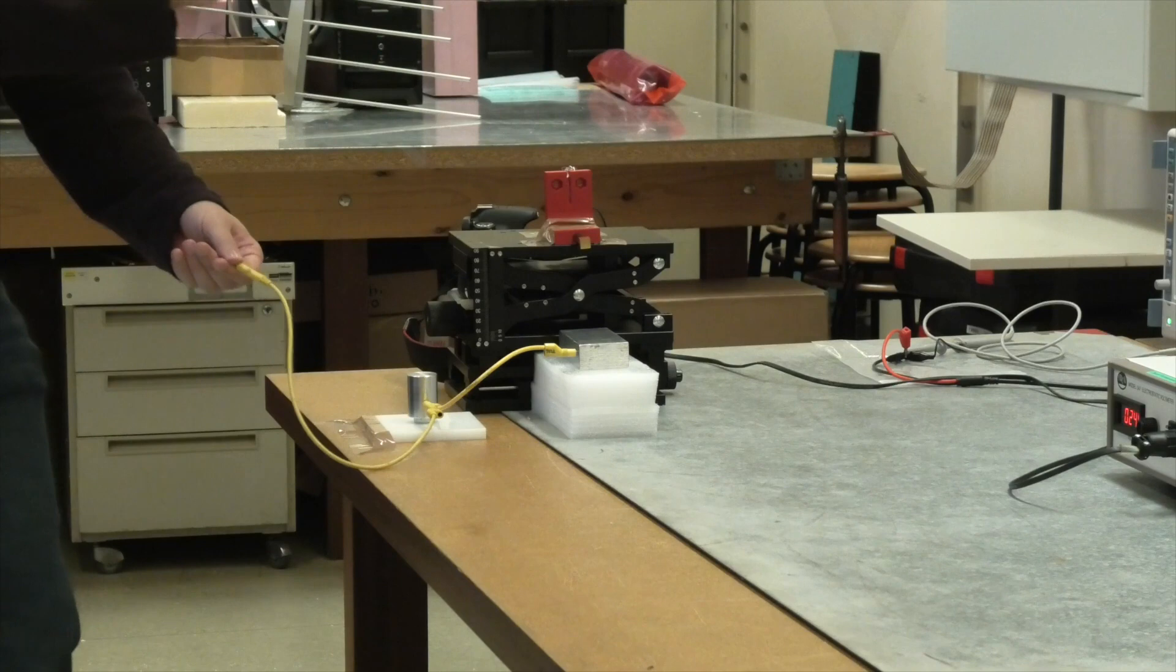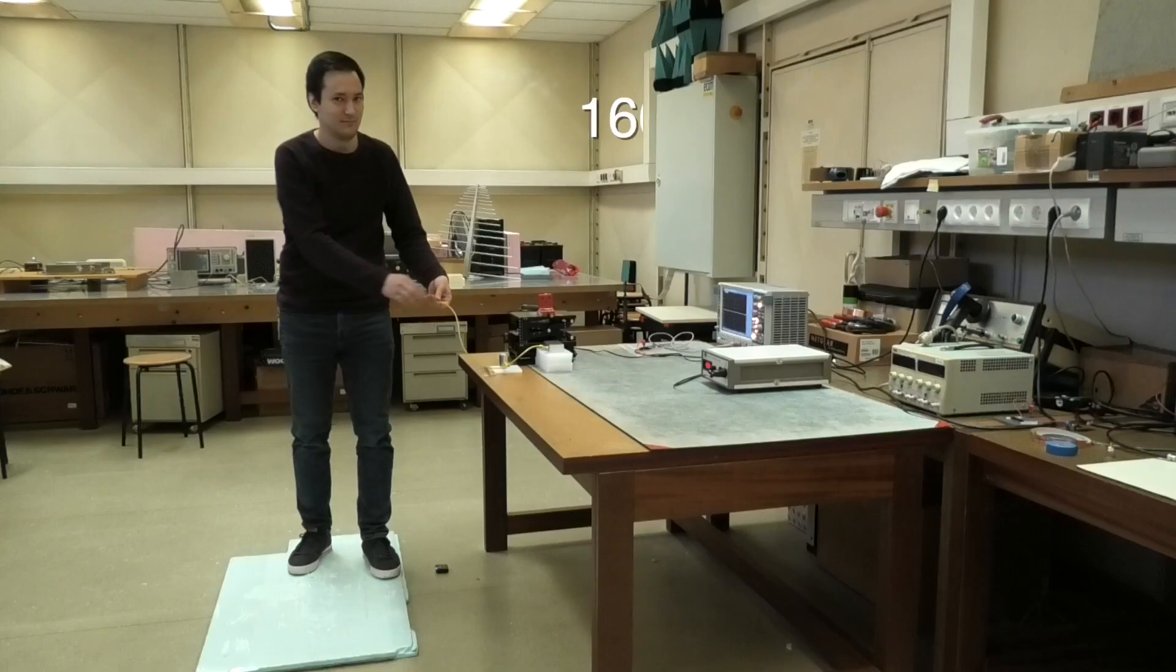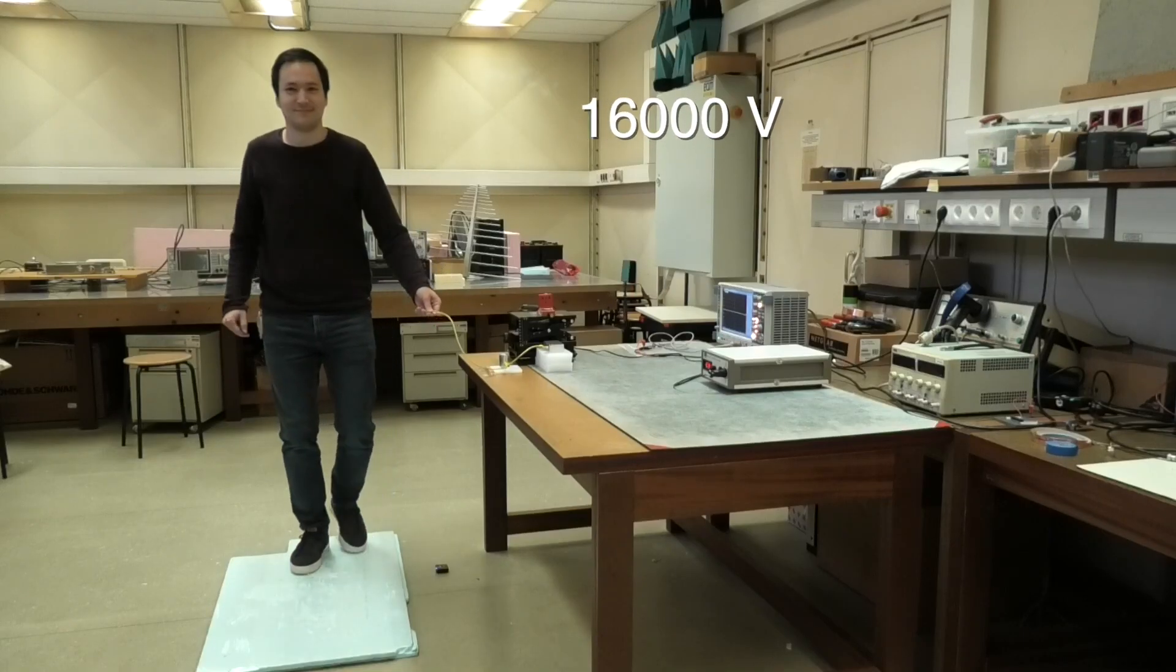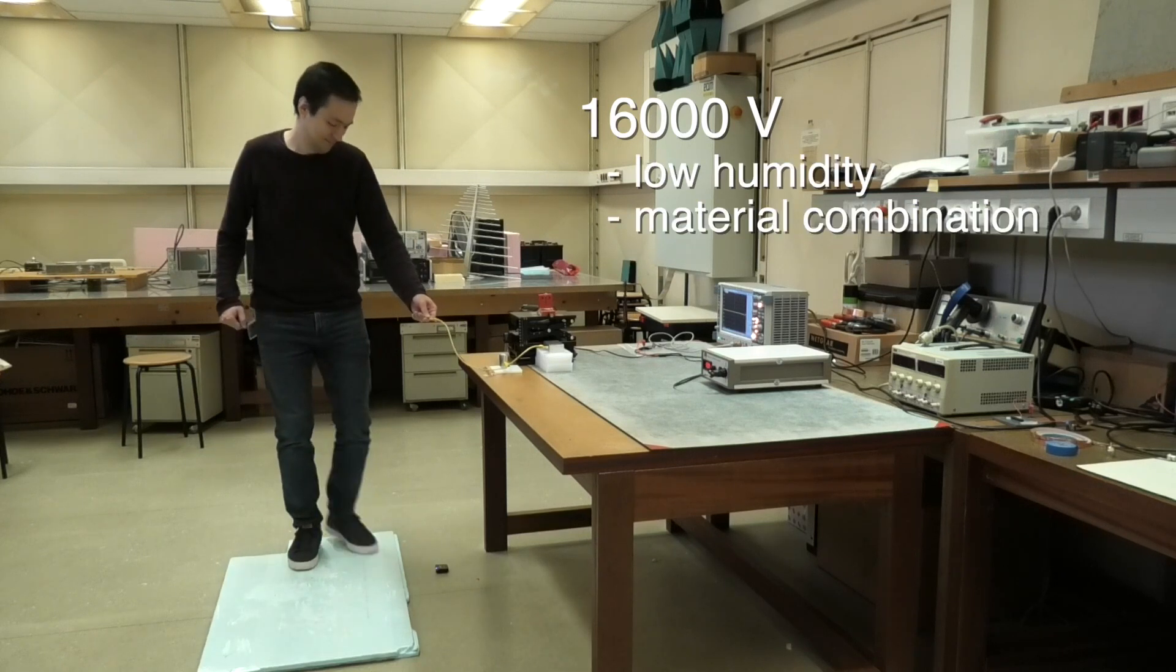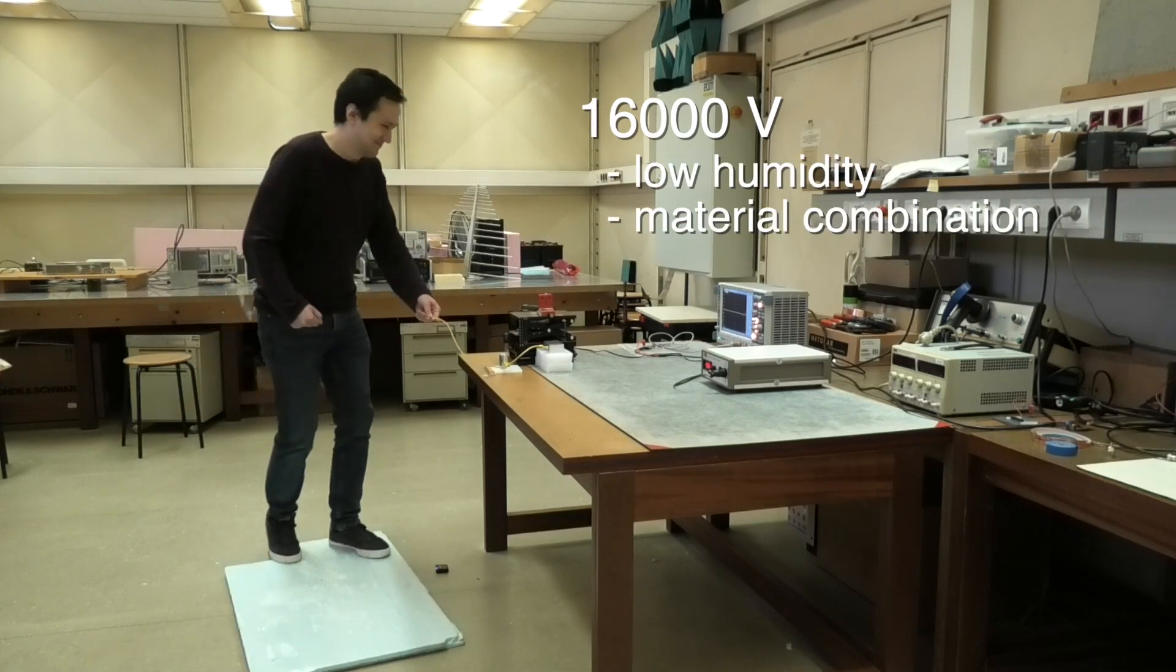In winter for example, voltage levels of 16000 volts are realistic due to low humidity. With my cotton clothing however, I don't make it to such high voltage levels.